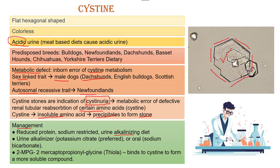To alkalinize the urine, you can use two things: potassium citrate is preferred due to its palatable nature, but oral sodium bicarbonate can also be used.